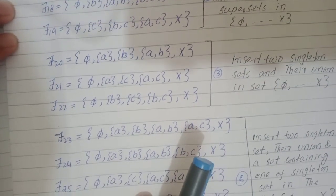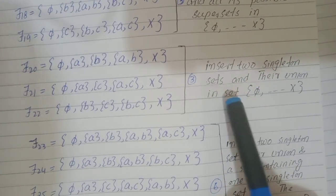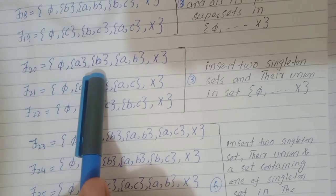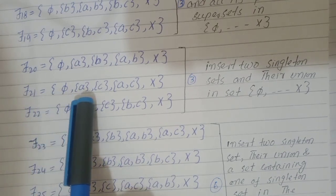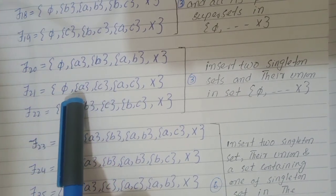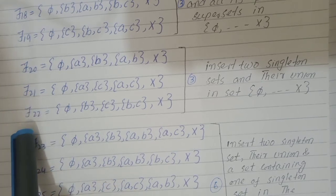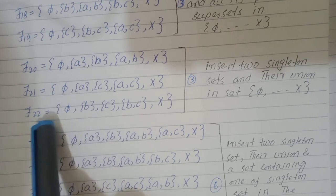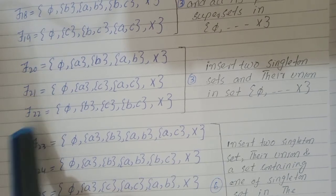For the next three topologies from τ20 to τ22, we insert two singleton sets and their union into {φ, X}. For τ20 we take {A} and {B} with union {A,B}. For τ21 we take {A} and {C} with union {A,C}. For τ22 we take {B} and {C} with union {B,C}, putting these subsets between φ and X.